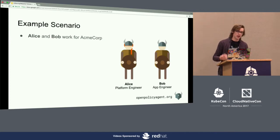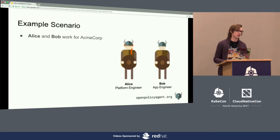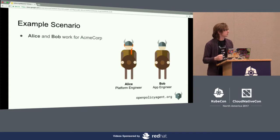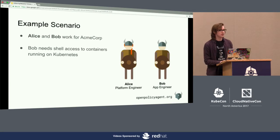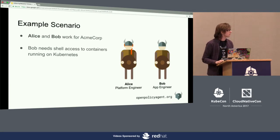I want to motivate this discussion with an example scenario. We've got Acme Corp, and they've got engineers. Alice is a platform engineer — she's responsible for setting up the Kubernetes clusters and making sure they're secure. Bob is an application developer who has to ship features as quickly as possible. Sometimes those features don't work the way he thought, and he needs to SSH or exec into containers to figure out what's going on.